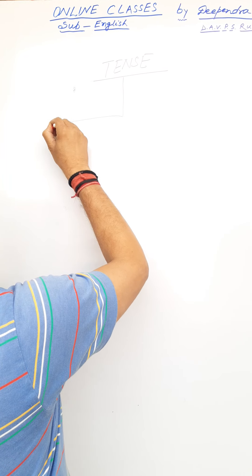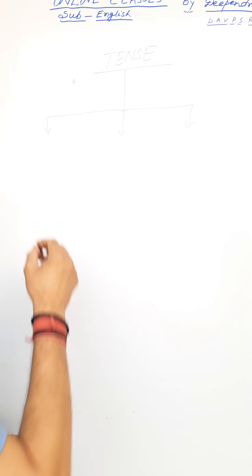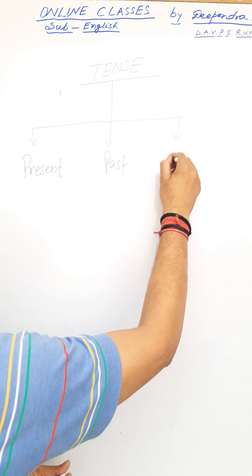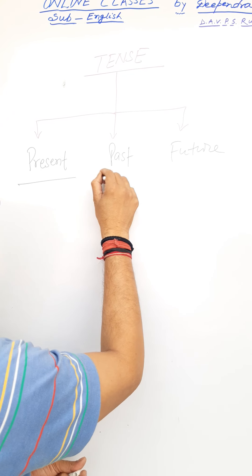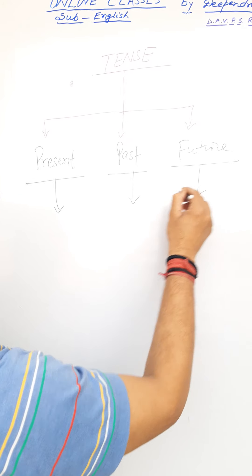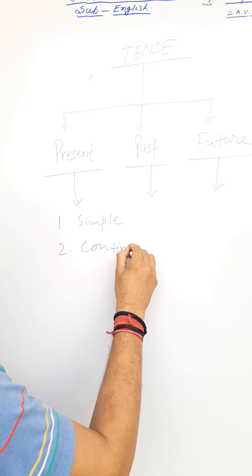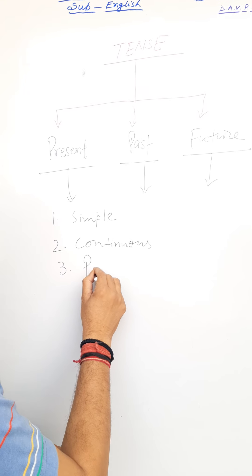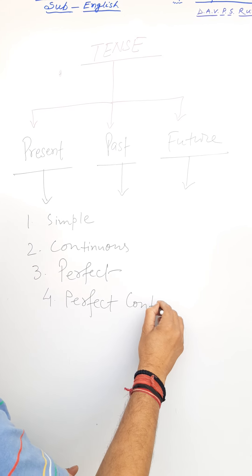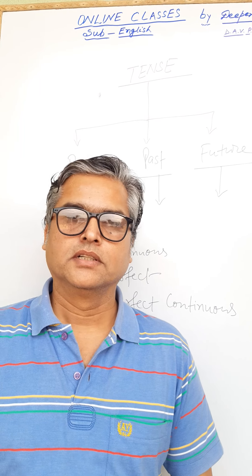There are three types of tenses: present, past, and future. Again, all these have four types — simple, present continuous, perfect, and perfect continuous. One by one we will deal with all tenses.